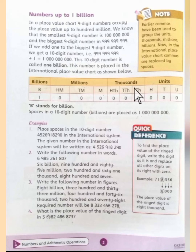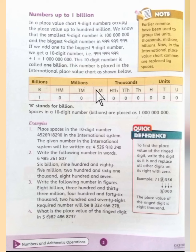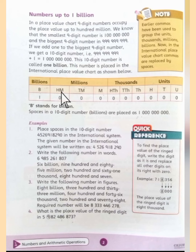In the thousands period, firstly you have the thousands place, secondly 10,000, and lastly 100,000. And the next portion is the millions. In the millions portion, firstly you have the million place, secondly TM stands for 10 million, and thirdly HM stands for 100 million. The last place in millions is 100 million. And the next portion, you have billions.